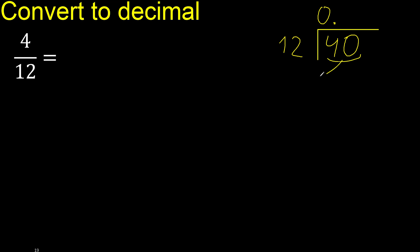0 point 40 is not less, therefore 12 multiplied by which number is nearest to 40 but not greater? 12 multiplied by 4 is 48, is greater. Multiplied by 3 is 36, is not greater.